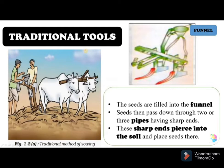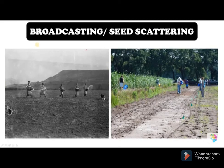Another method, not given in your textbook but commonly used, is called broadcasting or seed scattering. As you can see in the picture, people simply scatter seeds randomly here and there. The seeds fall on the ground and when they get favorable conditions, they germinate.